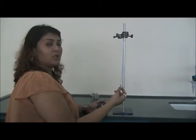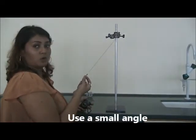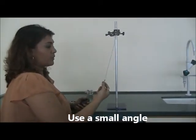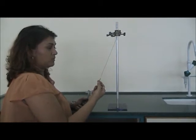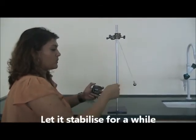The correct way of swinging a pendulum would be to use a small angle. So this would be a correct angle or a good angle. This would be too large an angle to use. So from here, you let the pendulum go, let it stabilize for a while. When it reaches its maximum displacement.